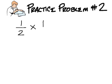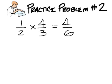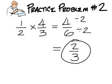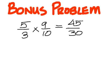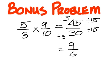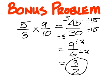Practice number 2 is 1 over 2 times 4 over 3. The solution is 4 over 6 from multiplying, but 2 is the highest number that goes into both, so it should be 2 over 3. The bonus problem is 5 over 3 times 9 over 10. Multiply straight across left to right to get 45 over 30. Divide both by 5 to get 9 over 6, but 3 still goes into both of them, so that gives us 3 over 2.